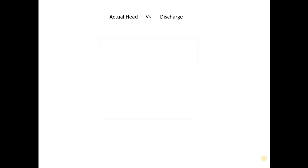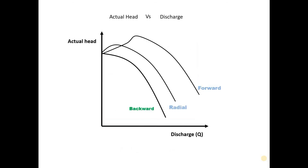Now let's have a look at the characteristic curve. It is a graph showing the relationship between head and discharge for forward, radial, and backward vane pumps. The actual head delivered by the pump is slightly less than the ideal head due to shock losses and frictional losses.